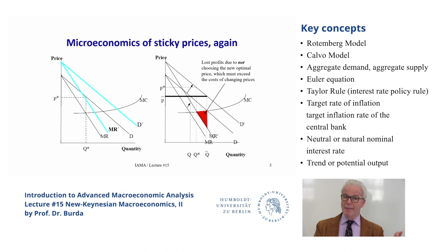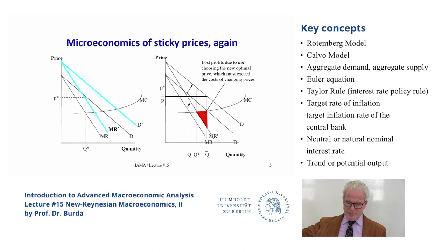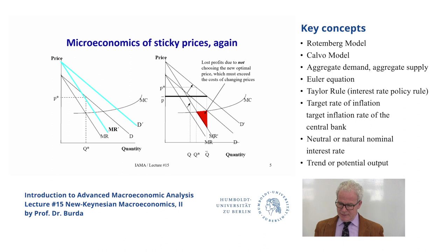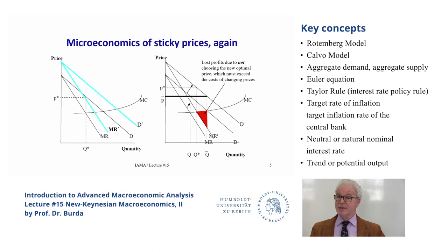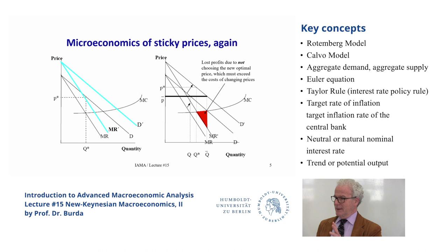This rationalizes both Rotemberg — where changing quickly involves costs — and Calvo, who says you just can't change because you don't have authorization. Suppose you're in the store and your boss was out to lunch and didn't tell you to raise prices — for some random reason you didn't get the authorization. Calvo's beautiful idea is that the random arrival of the ability to change prices means prices don't get adjusted instantaneously. It sounds ad hoc, but it turns out to be a pretty good approximation of actual behavior.